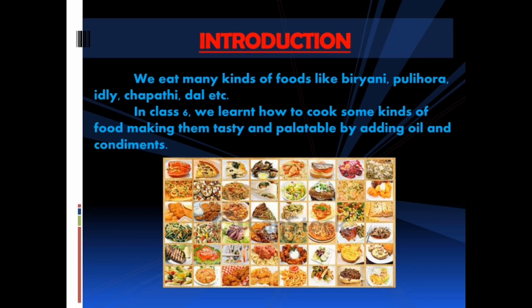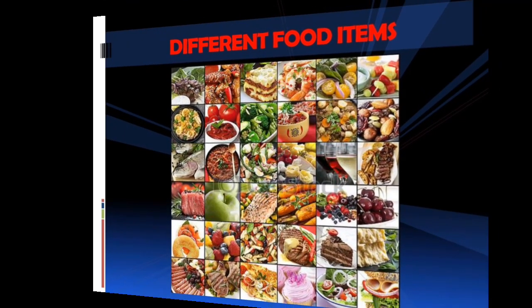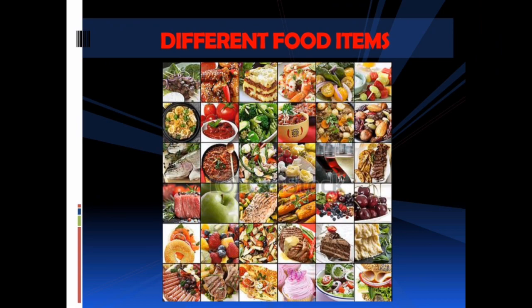We eat many kinds of foods like biryani, pulihora, idli, chapati, dal, etc. In Class 6, we learned how to cook some kinds of food, making them tasty and palatable by adding oil and condiments. You can see many food items of all categories in the pictures on the screen — vegetarian, non-vegetarian, green leaves, fruits, dry foods, and more.